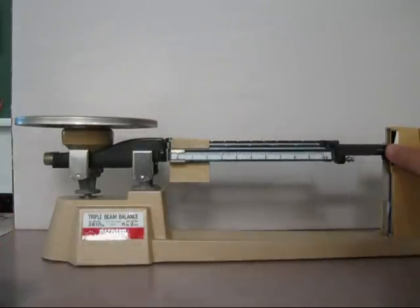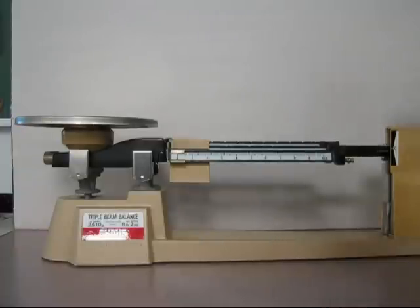I can touch the beam to keep it from moving so much, and I see that it's just below the zero mark. It needs to be adjusted, because nothing's on the pan. It should say zero.